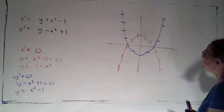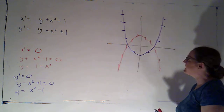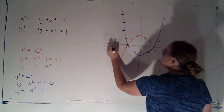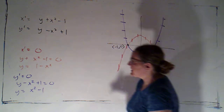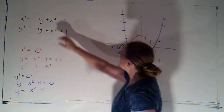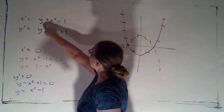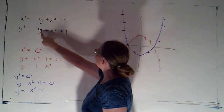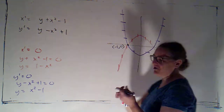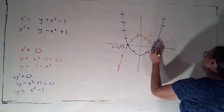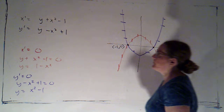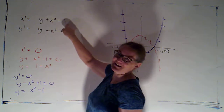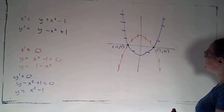The two parabolas intersect at two points: (-1, 0) and (1, 0). At (-1, 0): plugging into the first gives 0 + 1 - 1 = 0, and into the second gives 0 - 1 + 1 = 0. Similarly for (1, 0): 0 - 1 + 1 = 0 and 0 + 1 - 1 = 0. Those are the two equilibrium solutions.